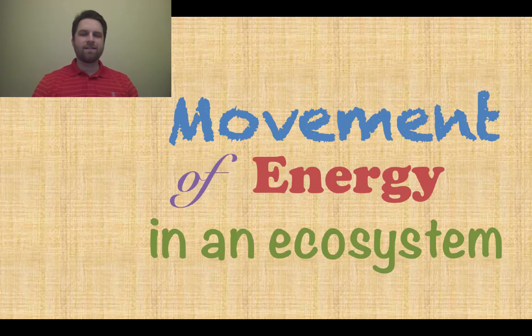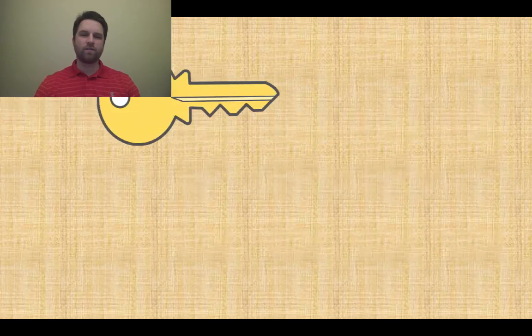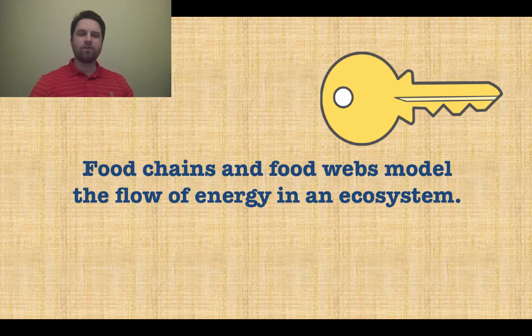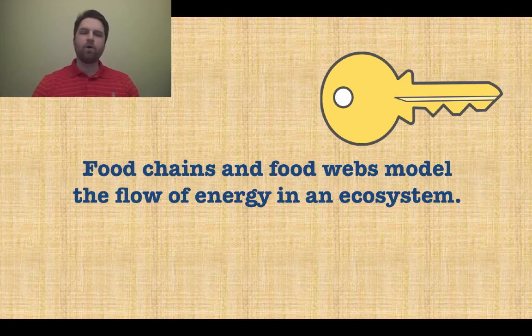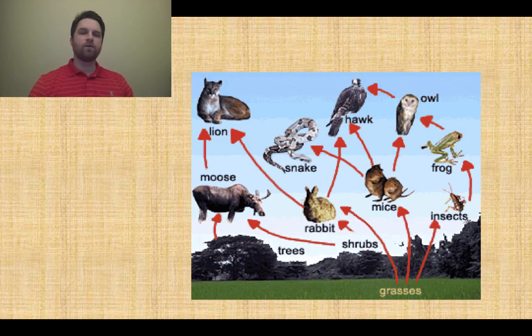Hey everyone, it's Mr. Veve. This lesson is about movement of energy in an ecosystem. So let's get right to it with your first key concept: food chains and food webs model the flow of energy in an ecosystem. We're going to look at both of those during this lesson.